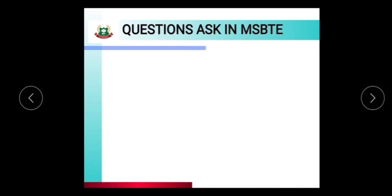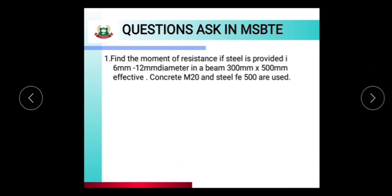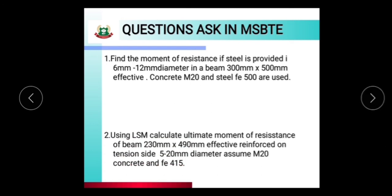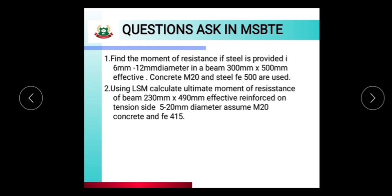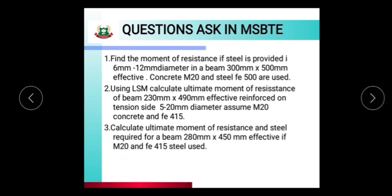These are the MSBD examination questions. First: find the moment of resistance if steel provided is 6 numbers of 12 mm dia in a beam 300 mm × 500 mm effective, with M20 concrete and Fe500 steel. Second: using LSM, calculate the ultimate moment of resistance of a beam 230 mm × 490 mm effective, reinforced with five numbers of 20 mm diameter on tension side, with M20 concrete and Fe415 steel. Third: calculate the ultimate moment of resistance and steel required for a beam 280 mm × 450 mm effective, if M20 and Fe415 steel are used.